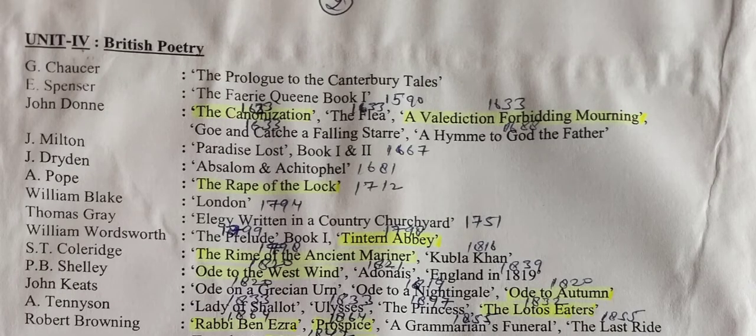Unit 4: British Poetry. Geoffrey Chaucer — The Prologue to the Canterbury Tales. Edmund Spenser — The Faerie Queene, Book First. John Donne — The Canonization, The Flea, A Valediction: Forbidding Mourning, Go and Catch a Falling Star, A Hymn to God the Father. John Milton — Paradise Lost, Books First and Second. John Dryden — Absalom and Achitophel.